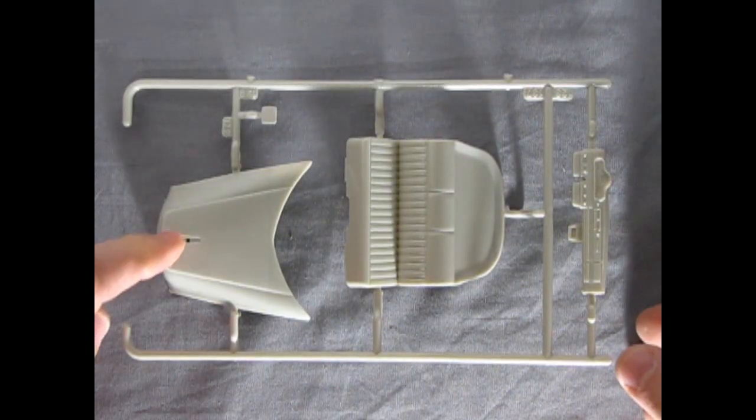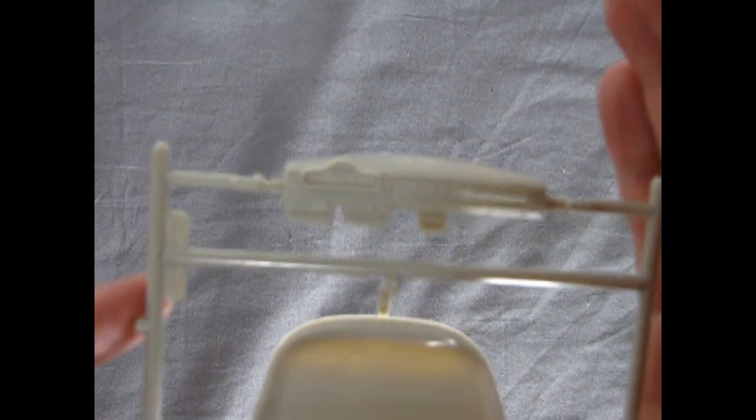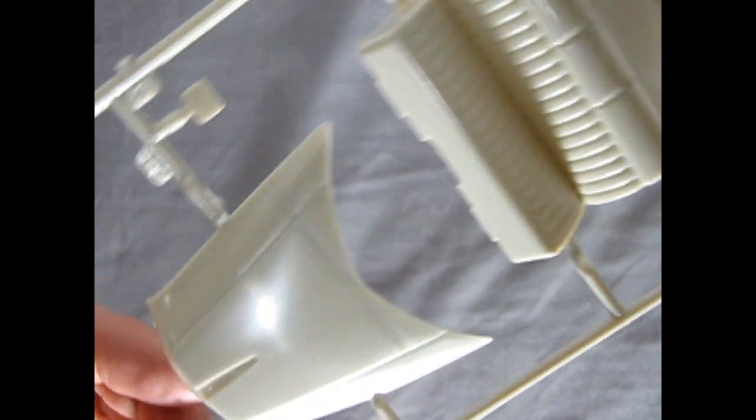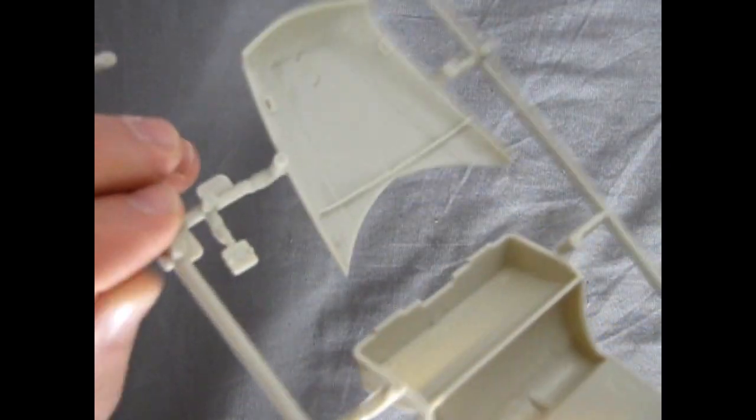And here we have our hood, gas filler cap, rear seat and package shelf, and our dashboard. And again look at that great detailing on there. You can see all the cool little lines and whatnot. There's our upholstery for our seat and our hood with the Hudson letters down below and the little gas filler cap.